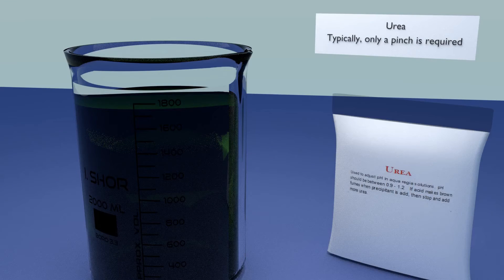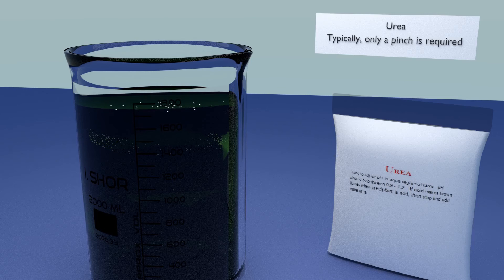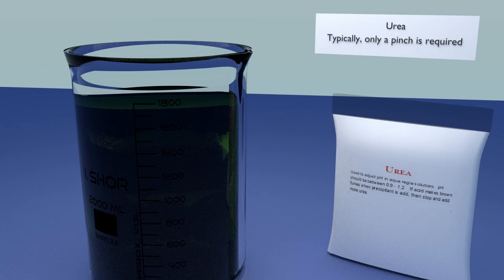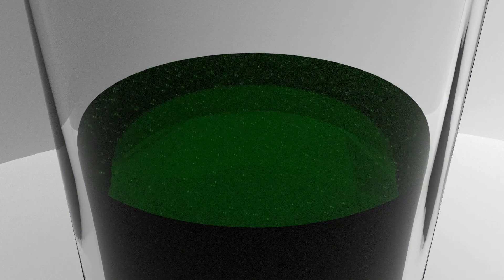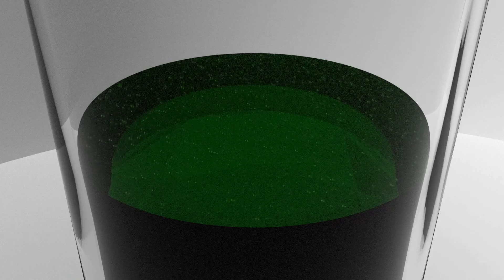Add a pinch of urea. If your ratios of metal, acid, and MX3 were correct, there will be no reaction. However, if the urea fizzes, then slowly add more until there is no reaction.